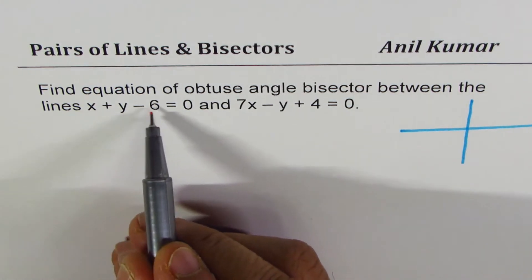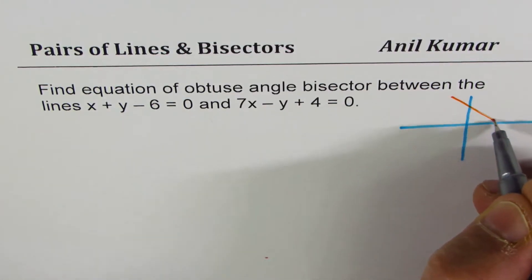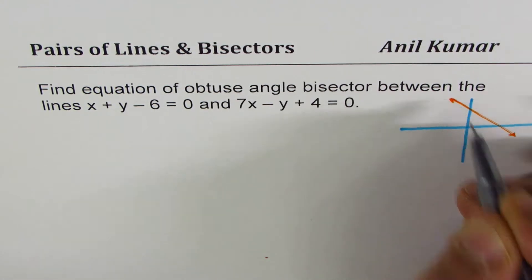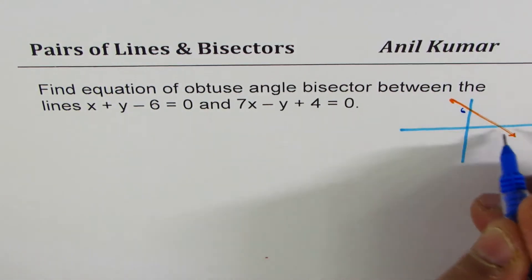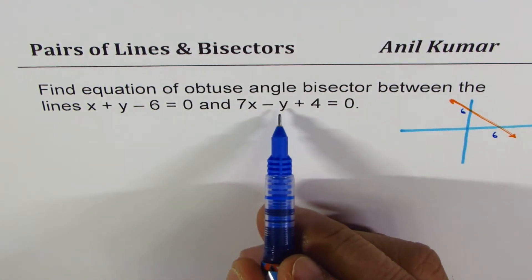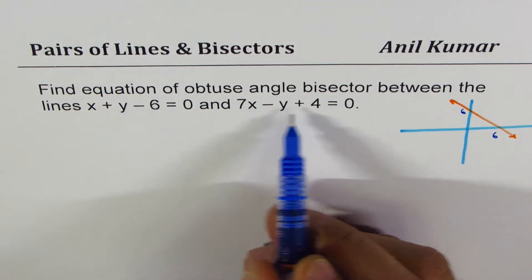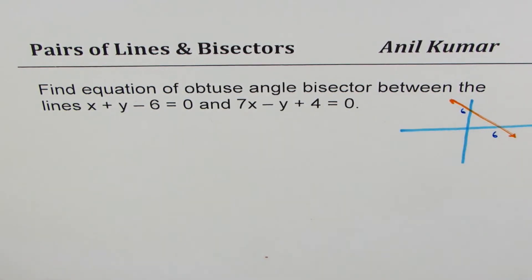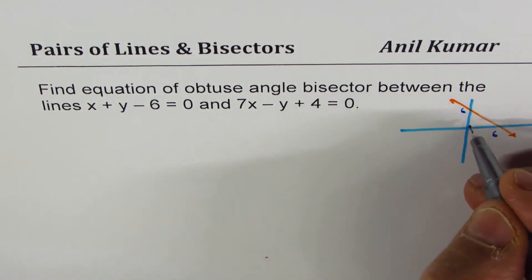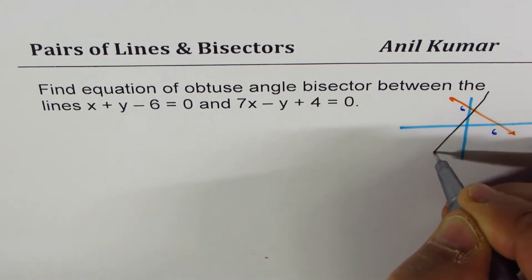The first line is x plus y equals 6, so that will look something like this, where the x and y intercepts are both 6. The other line can be written as y equals 7x plus 4 — so the y-intercept is 4, and it's a very steep line, something like this.